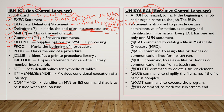PROC marks the beginning of a procedure and PEND marks the end of a procedure. JCLLIB identifies a private procedure library — where we will find our procedure. INCLUDE copies statements from another library member into the job. The SET parameter sets the default value for a symbolic variable, defining what value we are passing to our procedure.